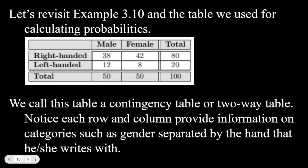Our example from 3.10, the table that we used for calculating the probabilities for when we were given their gender and the hand that they write with is given here. This table is called a contingency table or a two-way table. Notice that each row and column provides information on categories such as gender, and then also that gender is separated by the hand they write with.